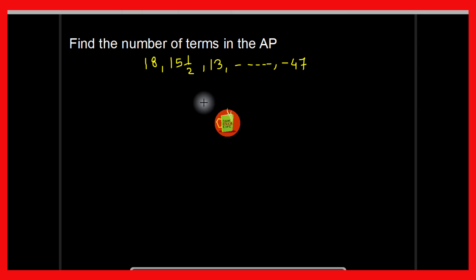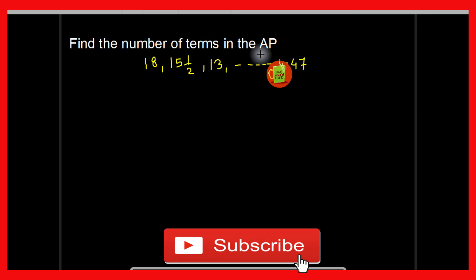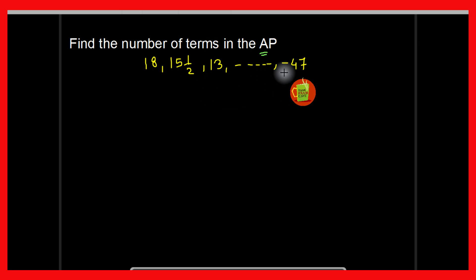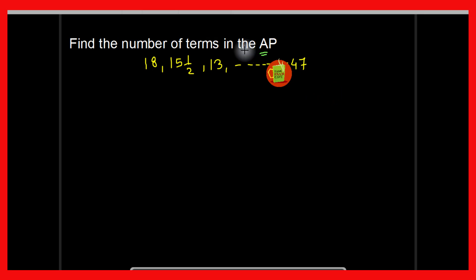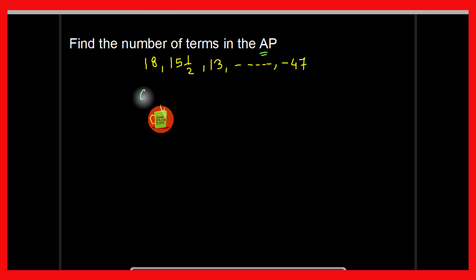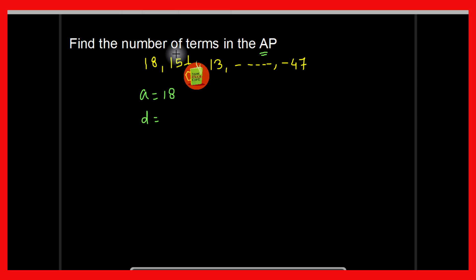So friends, here is the question on the screen: find the number of terms in the arithmetic progression 18, 15 and a half, 13, and so on up to minus 47. We have to find the number of terms in this arithmetic progression. Here, a, that is the first term, is 18. So a is equal to 18.